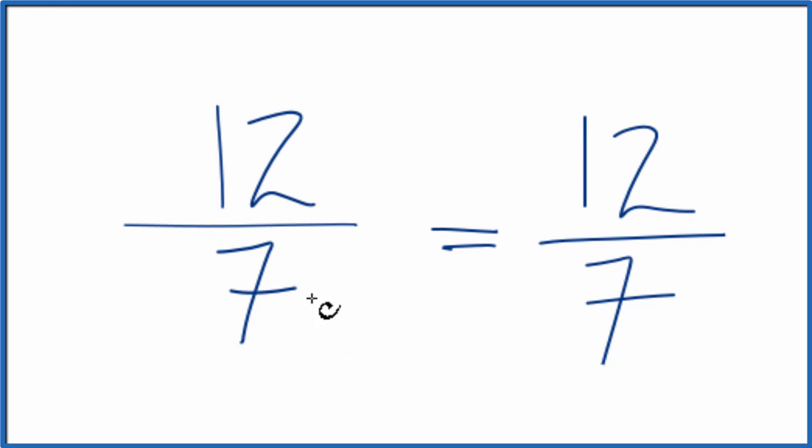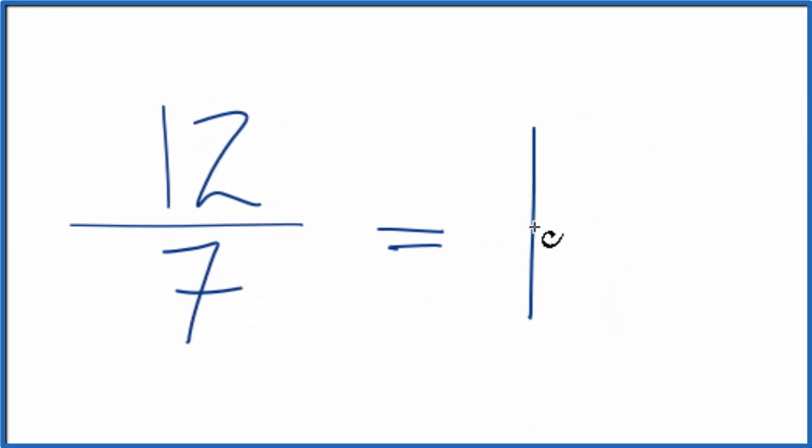Do note that 12 sevenths is an improper fraction, so we could convert it to a mixed number. Let's try that. 7 goes into 12 one time. 1 times 7, that's 7. And so we have 5 left over.